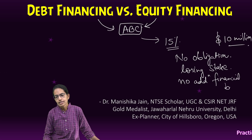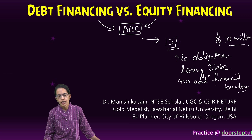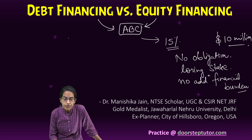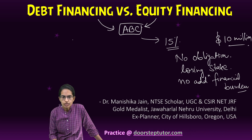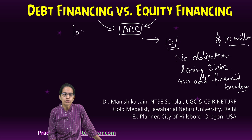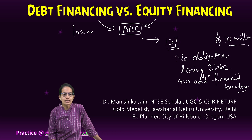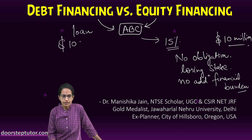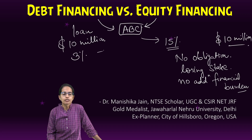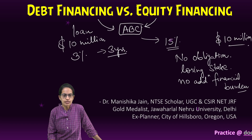The next is debt financing. The company should be credit worthy and trustworthy, and as a result can take a loan. Let's say the company takes a loan of $10 million. This loan has to be paid at an interest rate of around 3% and has to be repaid back in three years.